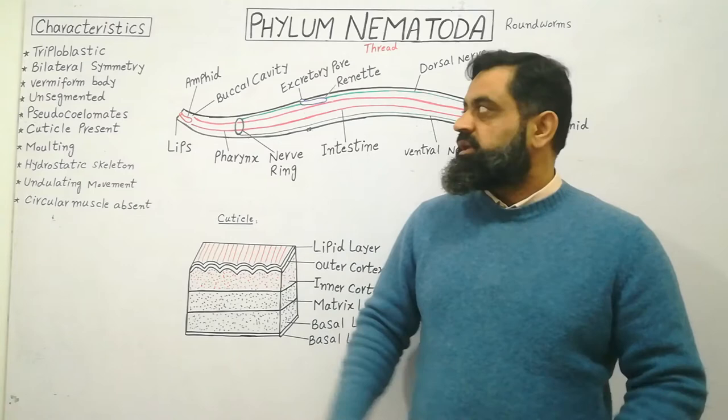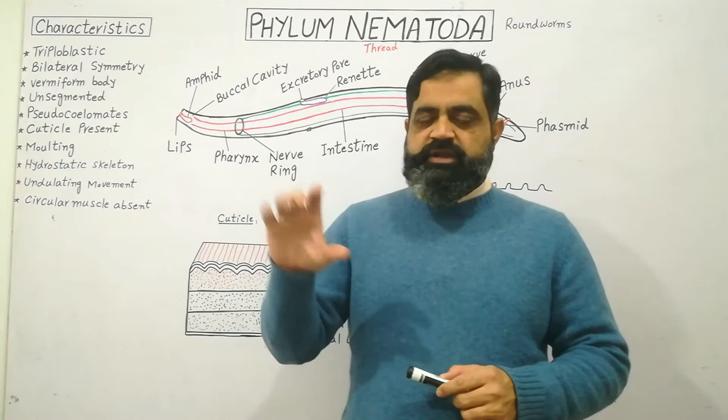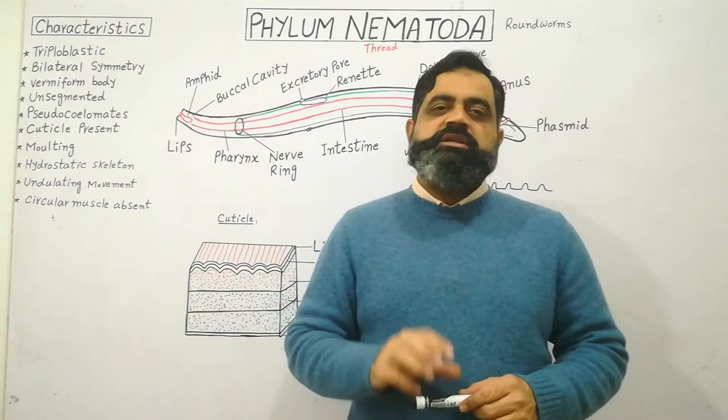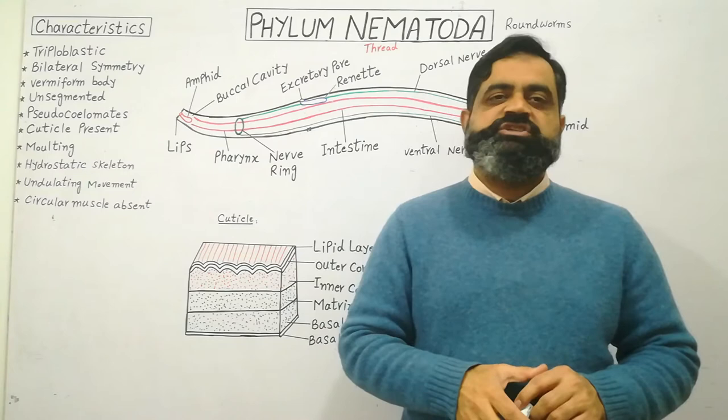These animals have bilateral symmetry. Because they are elongated with a long body shape, they have bilateral symmetry — the symmetry in which the animal can be divided into two equal halves in only one plane.